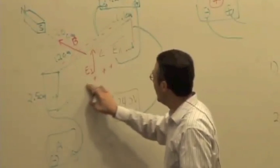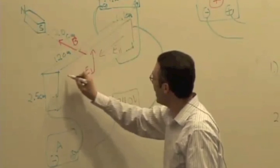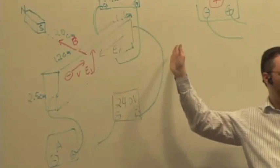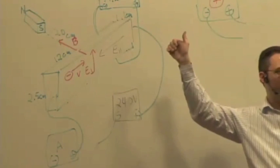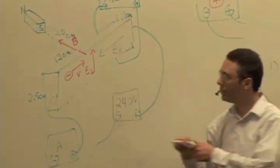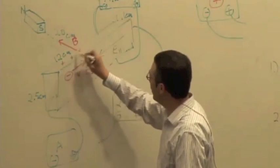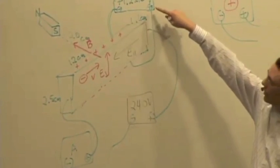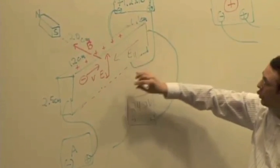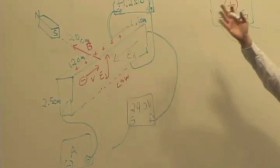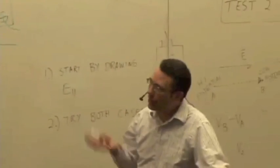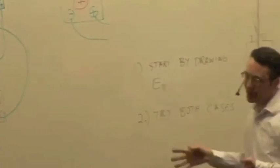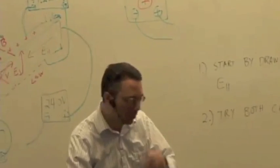Just to do the contrasting case: if we had negative charges moving that way, V cross B is up but it's a negative charge, so the force would be down. You'd get a buildup of negative charge on the bottom and positive charge on top. We should get a negative voltage because the positive terminal would be connected to the lower potential — but we don't; we're getting a positive voltage. So negative charges are ruled out. Drawing the electric field and trying both cases is the first step for any of these problems. We'll do the rest of this next time.